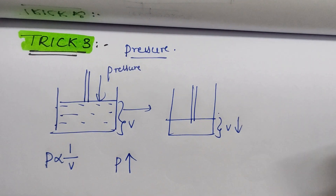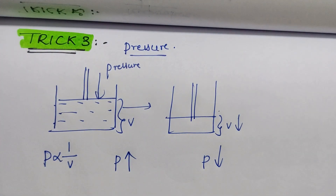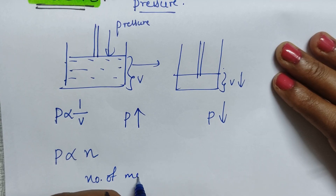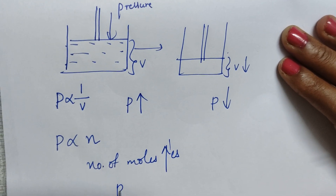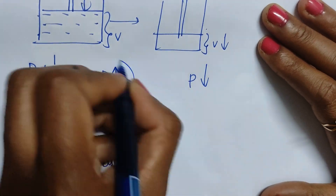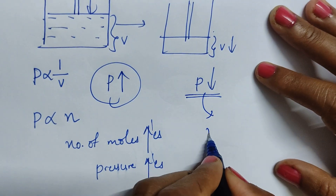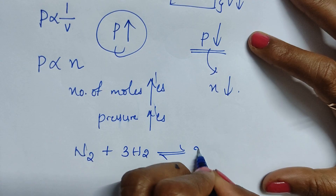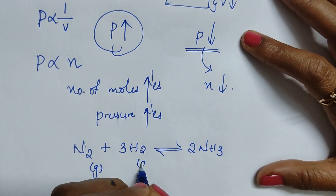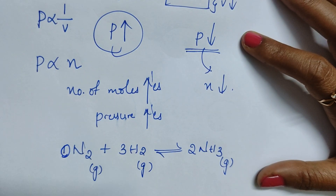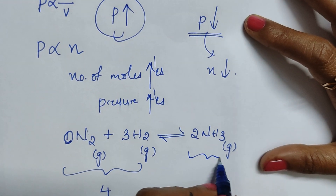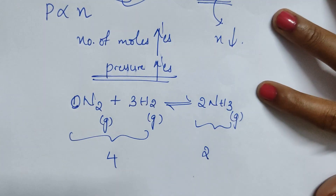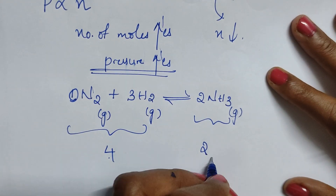When we increase the pressure, equilibrium shifts in a direction to decrease the pressure. Pressure is directly proportional to the number of moles — more moles means more pressure. So equilibrium shifts toward the side with fewer moles of gas. For example, in the Haber process: N₂ + 3H₂ → 2NH₃. On the reactant side there are 1 + 3 = 4 moles; on the product side there are 2 moles.